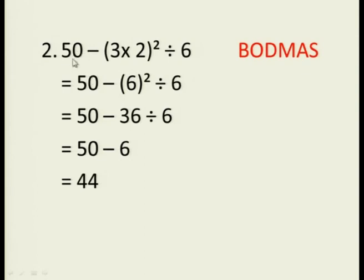The next one, 50 minus 3 times 2 in brackets squared divided by 6. 3 times 2 is our bracket, so we must do that first. And 3 times 2 is 6 and then we square it. So we get 6 squared and here we get 36. The 50 just gets brought down every time. The 6 gets brought down every time. And now we've got a subtraction and a division in the same line. Division comes before subtraction. So we're first going to divide. 36 divided by 6 gives you 6 and now we subtract. 50 minus 6 is 44.